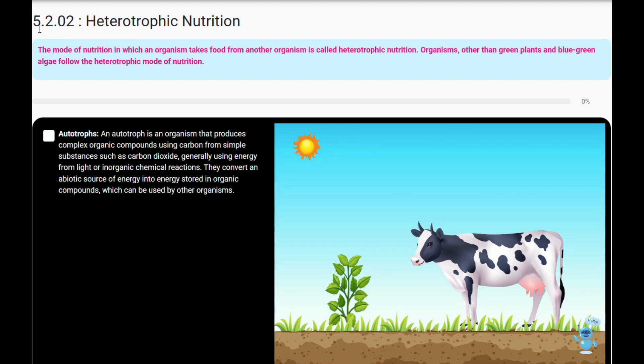Chapter 5.2 Section 02: Heterotrophic Nutrition. The mode of nutrition in which an organism takes food from another organism is called heterotrophic nutrition. Organisms other than green plants and blue-green algae follow the heterotrophic mode of nutrition.